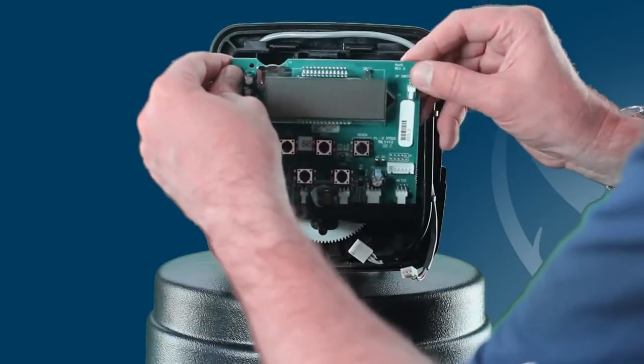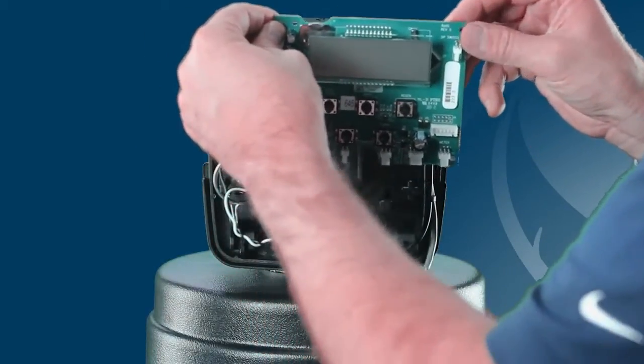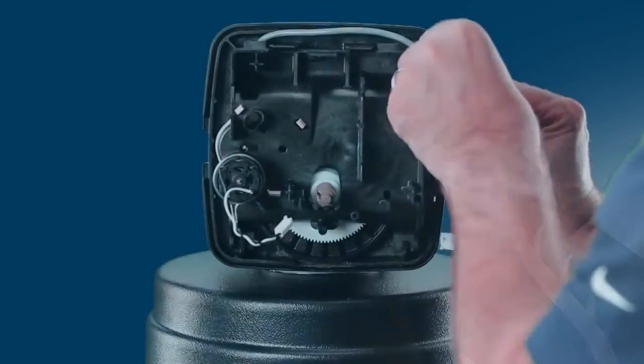Remove the PC board by lifting up on the tab at the top of the PC board and releasing it from the drive bracket. Set it aside gently on a clean, secure surface.